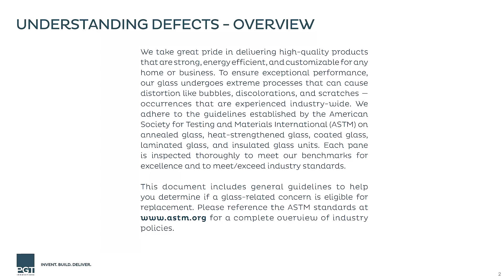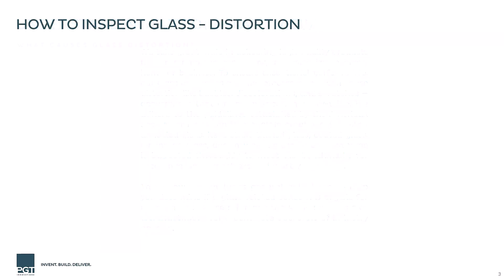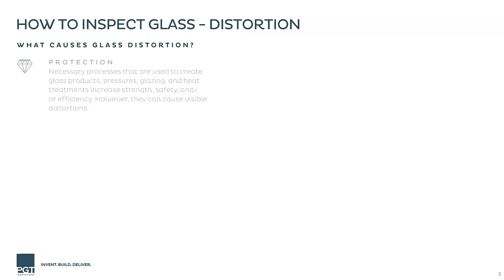There is no such thing as a perfect piece of glass that is 100% defect-free, but knowing what to expect with your glass will go a long way. Glass distortion can be caused by many factors and will always be apparent in glass.